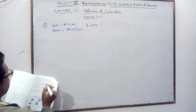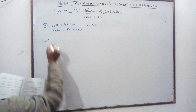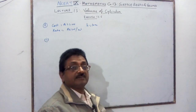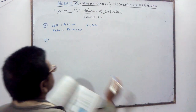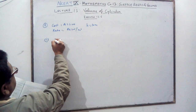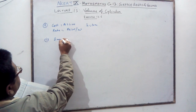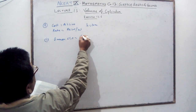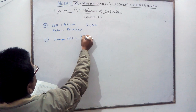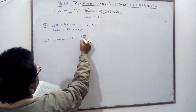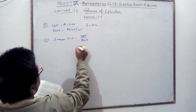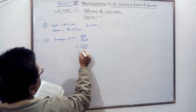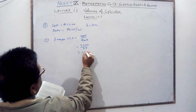The first part asks you to find the CSA — curved surface area — of the vessel. The inner CSA is equal to cost divided by rate, that is 2200 divided by 20, which gives you 110 meter square.